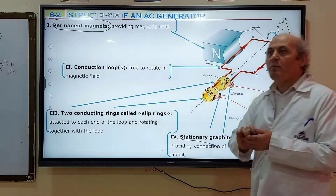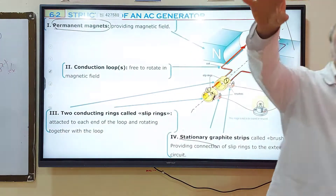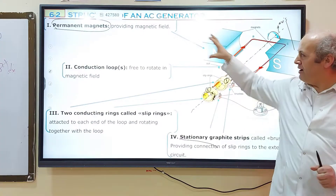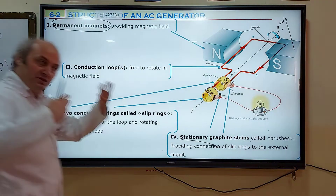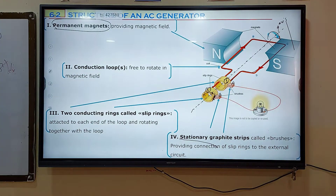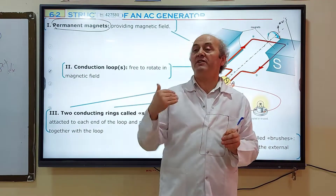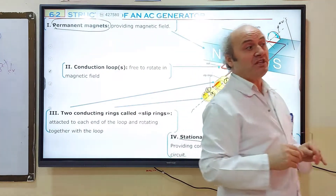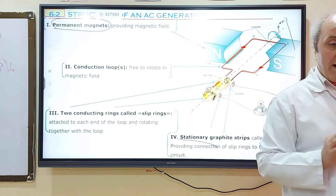These are the four basic components of a generator. You can build your own generator if you provide these four components. As the loop rotates inside the magnetic field, the magnetic flux is changing. As the magnetic flux changes, an induced EMF is produced — a continuous EMF will be induced. However, this EMF's magnitude and direction will change over time.